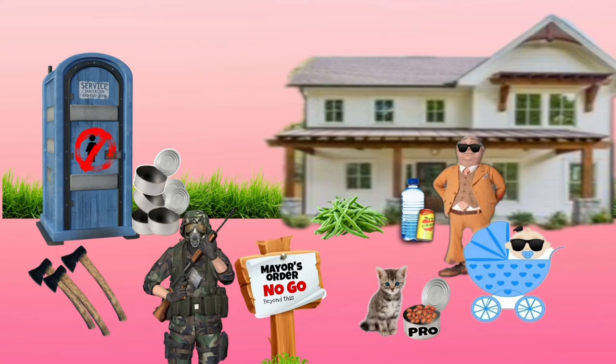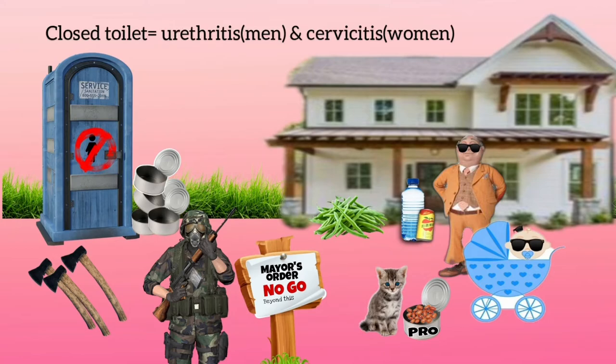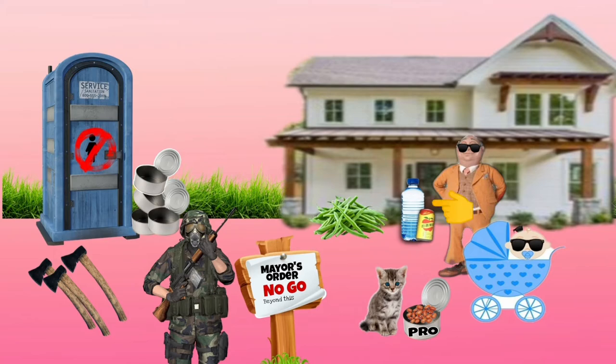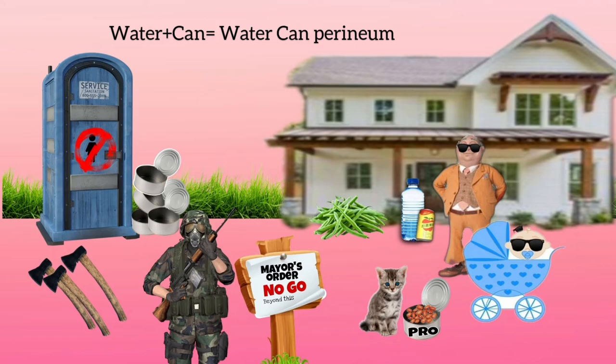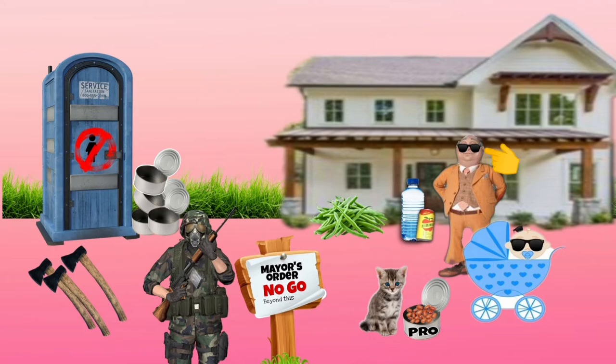There was a public toilet which was closed after building the mayor's mansion. The closed restroom symbolizes that gonococci causes urethritis and cervicitis. The water bottle and energy drink can have another meaning here: water and can symbolize Waterhouse-Friderichsen syndrome, which is a complication caused by gonococci.